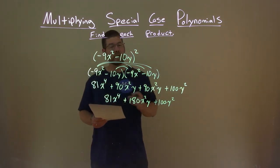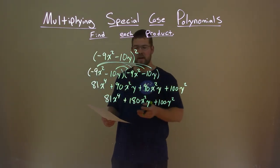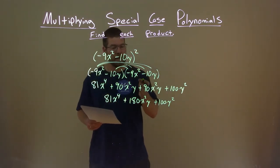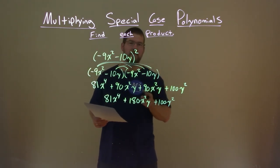And we have our final answer here now of 81x to the fourth power plus 180x squared y plus 100y squared.